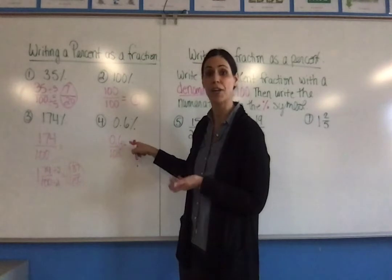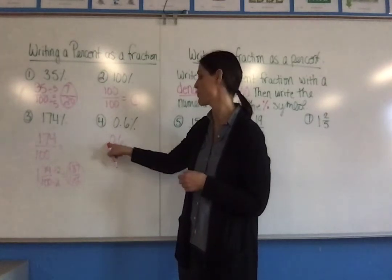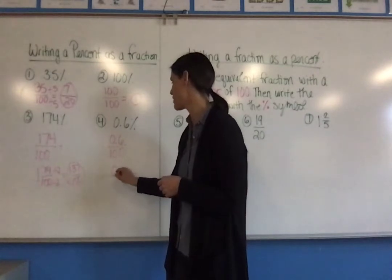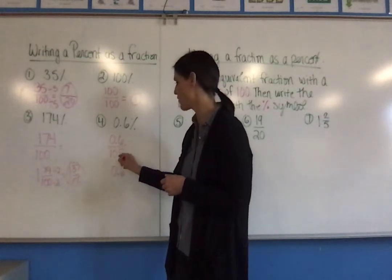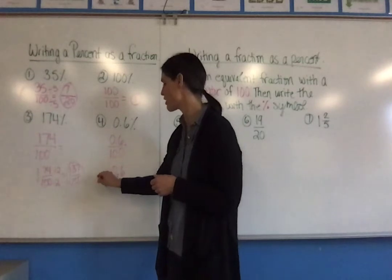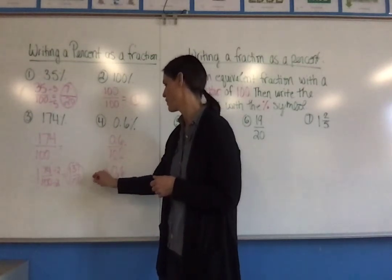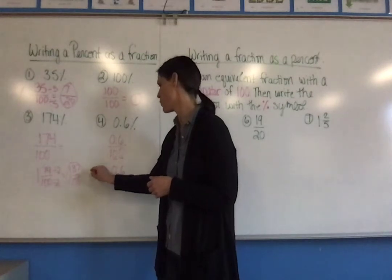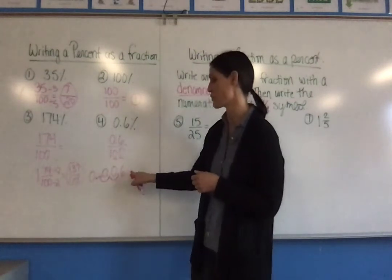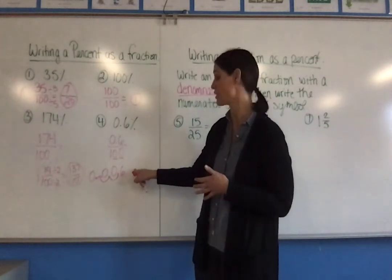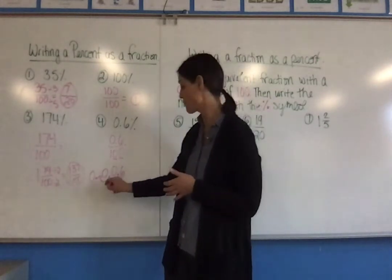So if you take out your calculator and you would put 0.6 divided by 100, you would see what happens is that the decimal point, when I'm dividing by 100, moves one place to the left for each zero. So in other words, it's 0.006. Now, I still have not written this as a fraction. It's still a decimal.